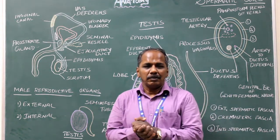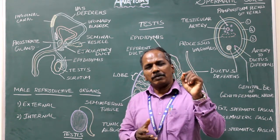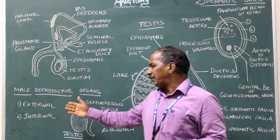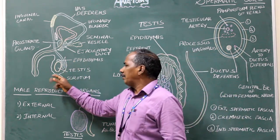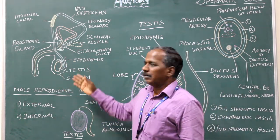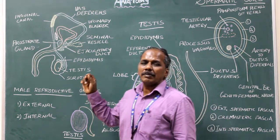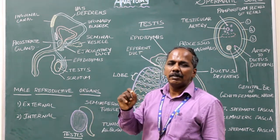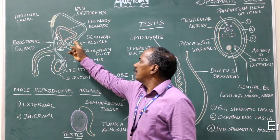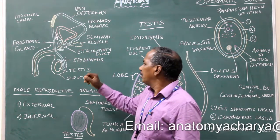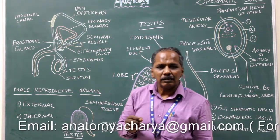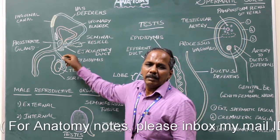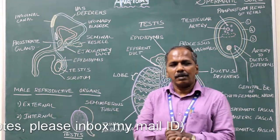Male reproductive system. The parts of the male reproductive system are divided into external parts and internal parts. The external parts include scrotum, testes, epididymis, and spermatic cord. The internal parts include vas deferens, seminal vesicle, ejaculatory duct, prostate gland, and bulbourethral gland. So these are the parts of the male reproductive system.